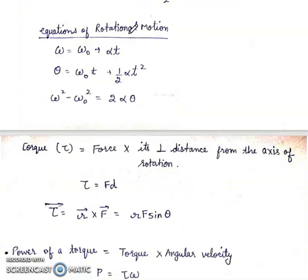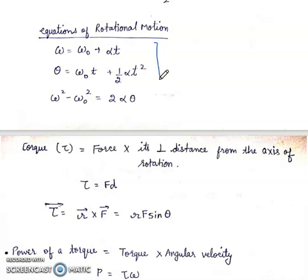Next is the equation of rotational motion. We had three equations of uniformly accelerated motion and these rotational equations are analogous to them. Omega equals omega-naught plus alpha·t; theta equals omega-naught·t plus half·alpha·t²; omega² minus omega-naught² equals 2·alpha·theta. These are analogous to the linear equations: v equals u plus at, s equals ut plus half·at², and v² minus u² equals 2as.